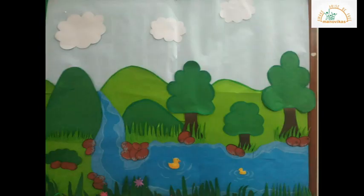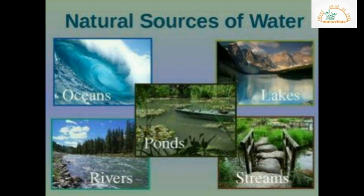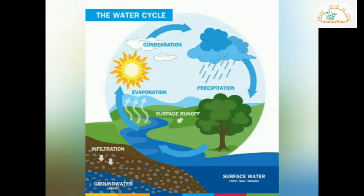Rain is the main source of water. It falls on the ground and collects in lakes, ponds, wells, rivers, and streams. Children, have you ever wondered where the rain comes from or how the clouds are formed?